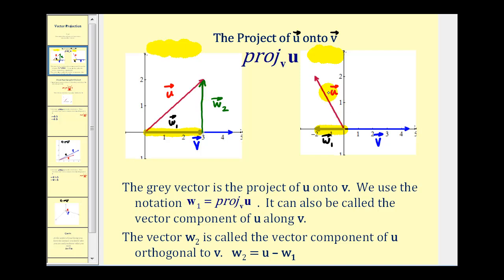On the second sketch, vector w sub two — the vector component of u that's orthogonal to vector v — is this vector here. Notice it's orthogonal, or perpendicular, to vector v. And vector w one plus vector w two equals vector u.